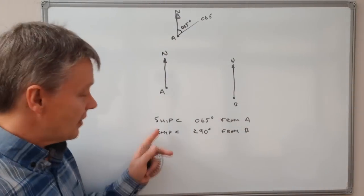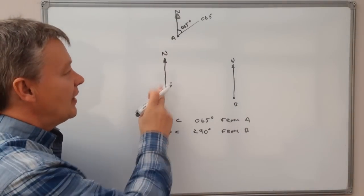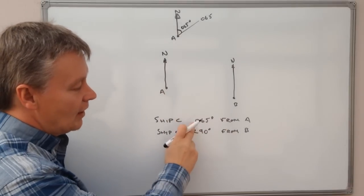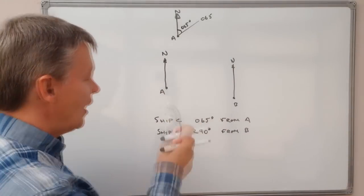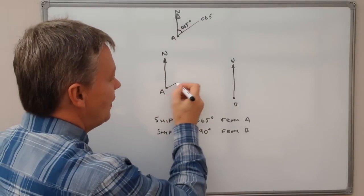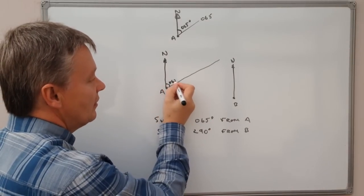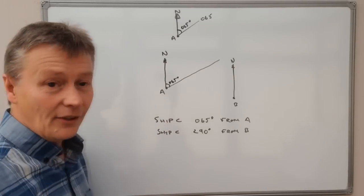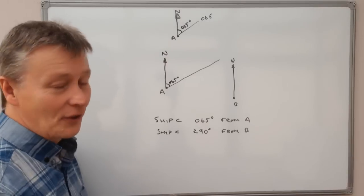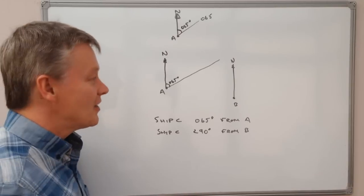You're also given that ship C is on a bearing of 290 degrees from ship B. If we look at ship A — imagine you're standing on the deck facing north — we're going to plot a line from A at 065 degrees. Use the protractor and mark 065 degrees like that. So if you're standing on the deck of ship A and look across at 065 degrees, you're going to see ship C somewhere along that line.